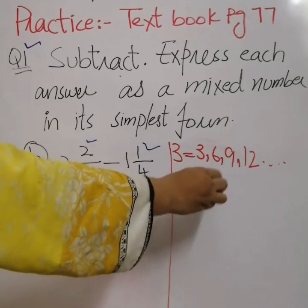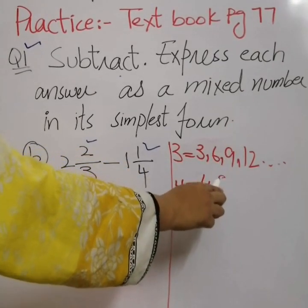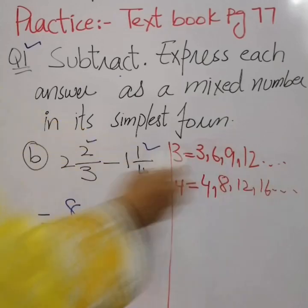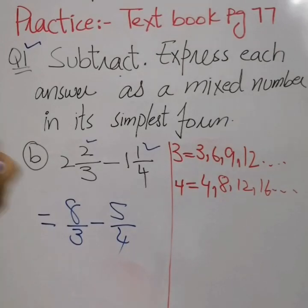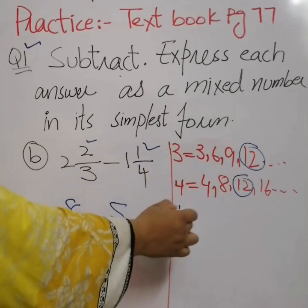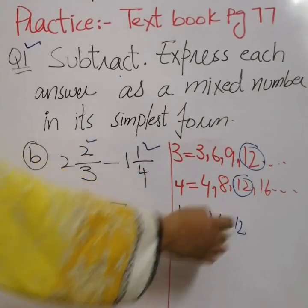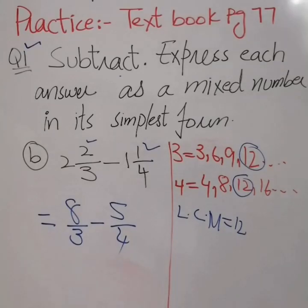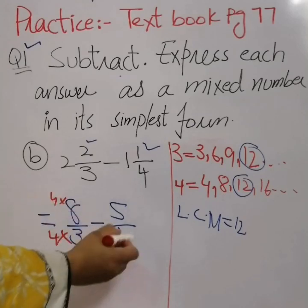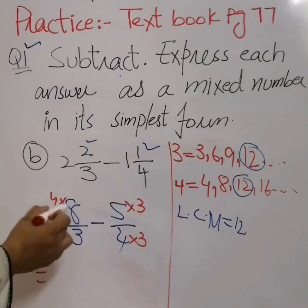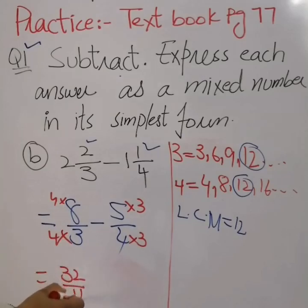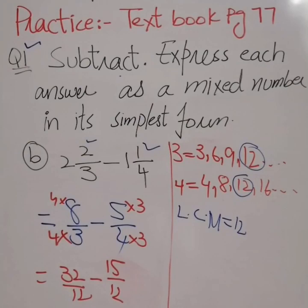By taking the multiples of 4, we find the same number 12 in both the multiples, so the LCM is 12. We make both denominators 12. 8 times 4 is 32 over 12, minus 5 times 3 is 15 over 12. Now we subtract: 32 minus 15 gives us 17 over 12.